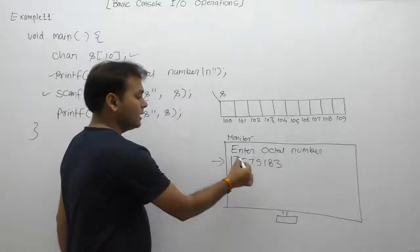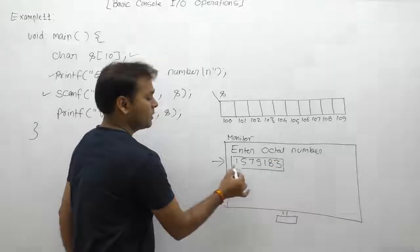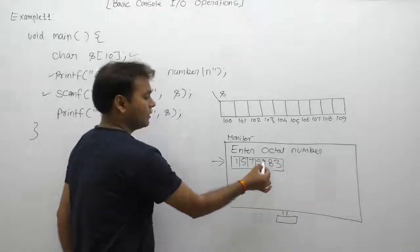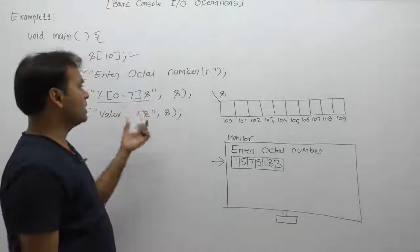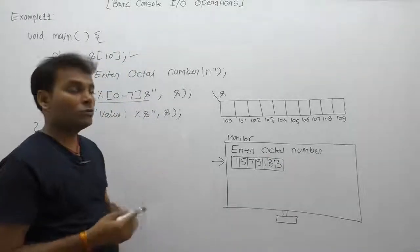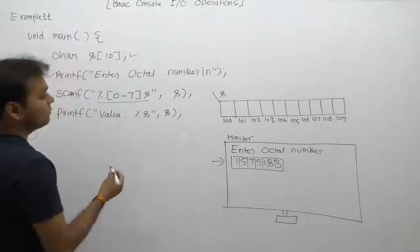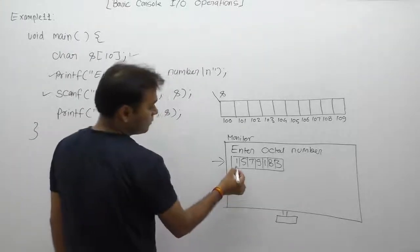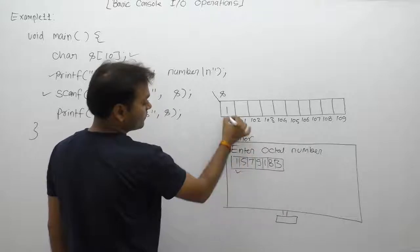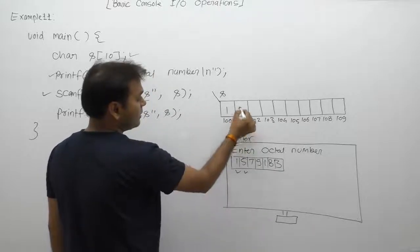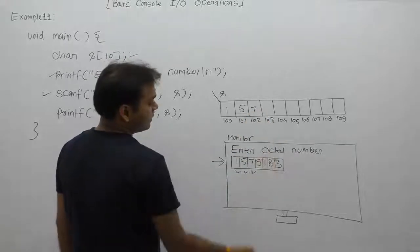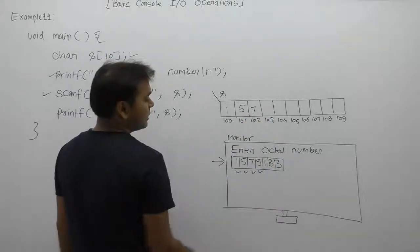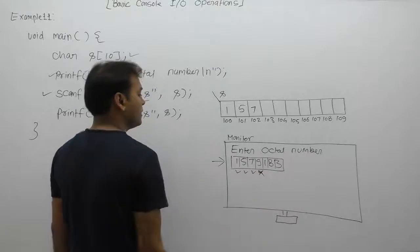In this case, only octal digits range from zero to seven. Therefore it will read one by one all symbols. First of all, 1 is a valid octal digit. Next, 5 is a valid octal digit. Seven is also a valid octal digit. Then 9 - 9 is an invalid octal digit.